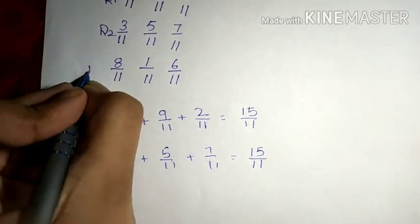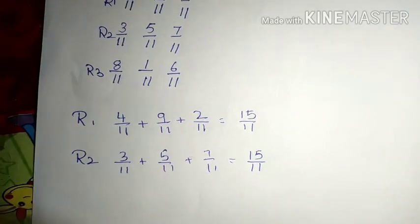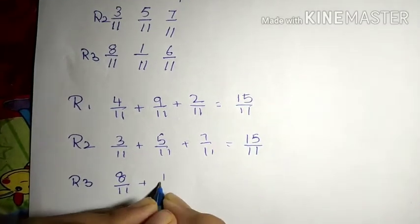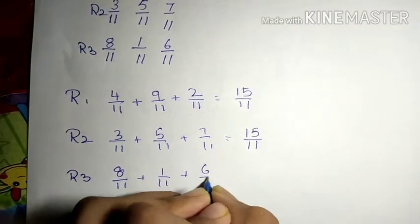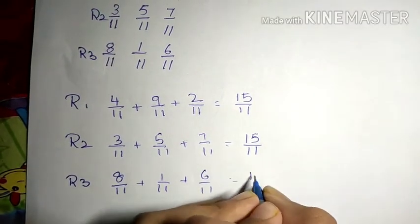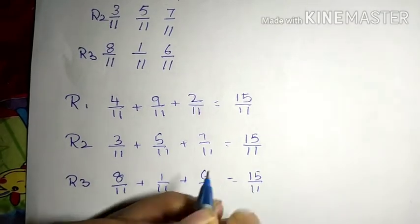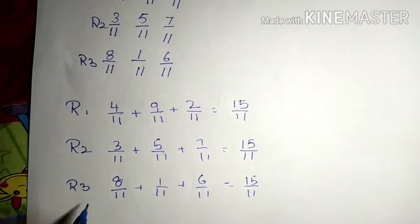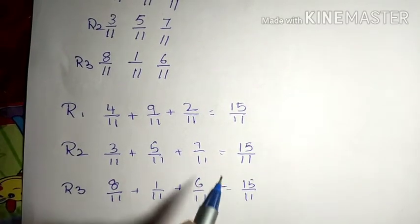Now this is row 3. Row 3 is equal to 8/11 plus 1/11 plus 6/11. So 6 plus 1 is 7, 7 plus 8 is again 15. So by adding, the sum of these 3 rows is 15/11.